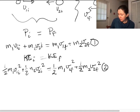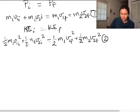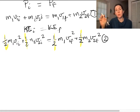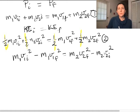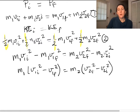At this point the algebra starts to get a little hairy. We can cancel all of the one-halves — there's a one-half in every term that we can cancel out. Then I'm going to get all of the M1 terms on one side and all of the M2 terms on the other side. Then I'm going to factor out M1 from the M1 side and M2 from the M2 side.